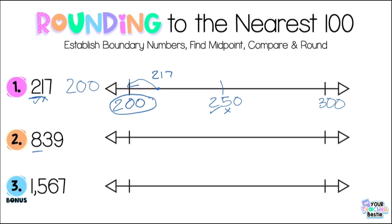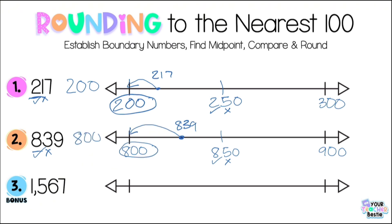Awesome job! Now example number two: we have the number 839. Underline the hundreds place, which is 8. Step one: boundary numbers — 800 and 900. Step two: midpoint — 850. Step three: compare 839 with 850. Is 800 and 800 equivalent? Yes. What about three tens and five tens? Three tens is less than five tens, so we're going to round 839 down to 800. So 839 is closer to 800 than it is to 900.